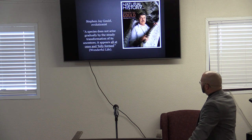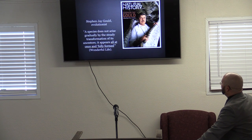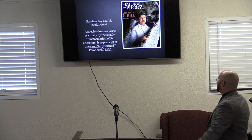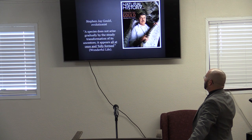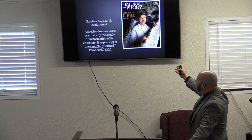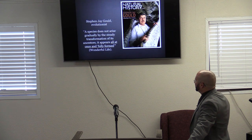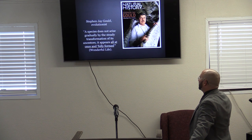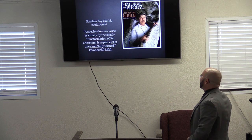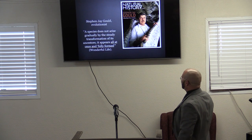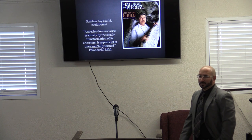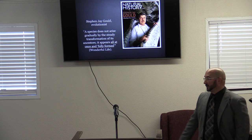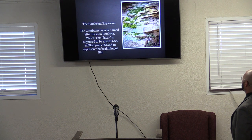Stephen J. Gould, an evolutionist, states: 'A species does not arise gradually by the steady transformation of its ancestors; it appears all at once and fully formed.' He believes in evolution and yet this is what he's saying — they don't arise gradually by the steady transformation of ancestors. It appears all at once and fully formed, everything it needs already there.